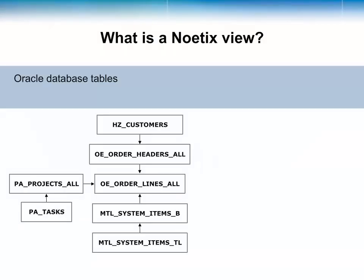This diagram represents part of an Oracle eBusiness Suite database — the tables that contain information about customers and the items they have purchased. In this example, there are seven database tables joined together in a very specific order.